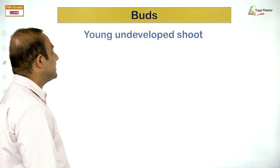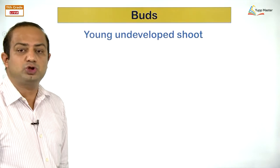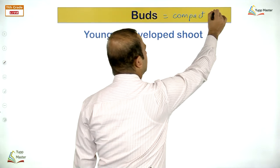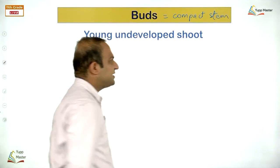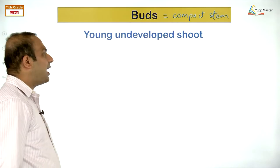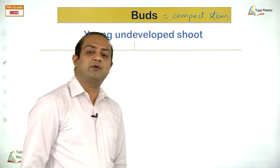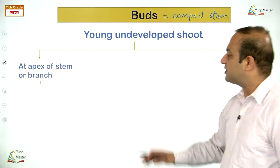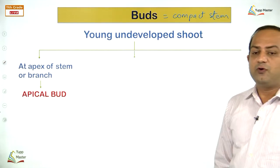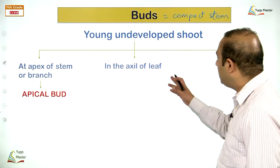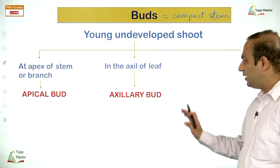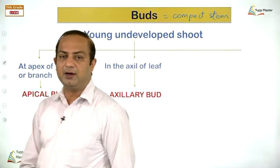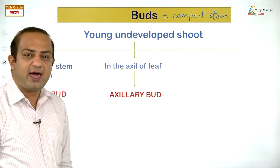Along with the axillary bud, accessory buds may also be present — not always. They are also considered lateral buds. The third category is buds placed other than the stem — called adventitious buds. Adventitious buds may be present on roots and are called radical buds. Examples include sweet potato, Dahlia, and asparagus.